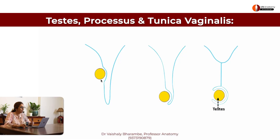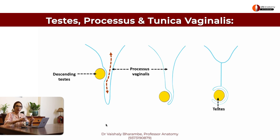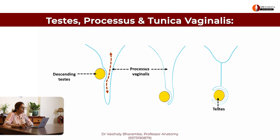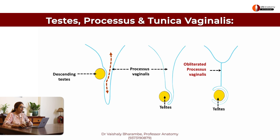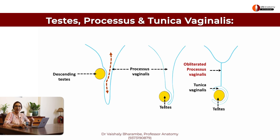Understand it once again. That's the testes, that's the processus vaginalis leading the way. At this moment in time, processus is communicating with the abdominal cavity. With time, the testes have come into the bottom of the scrotum. The processus vaginalis is getting obliterated, leaving behind a sac — the tunica vaginalis.